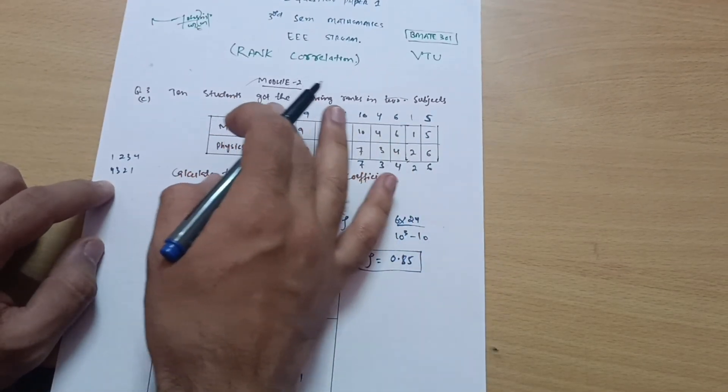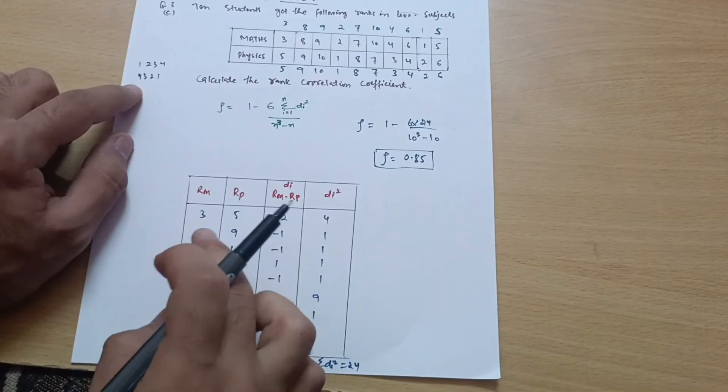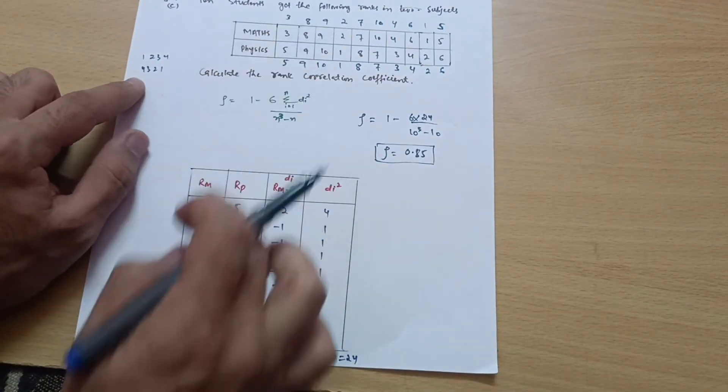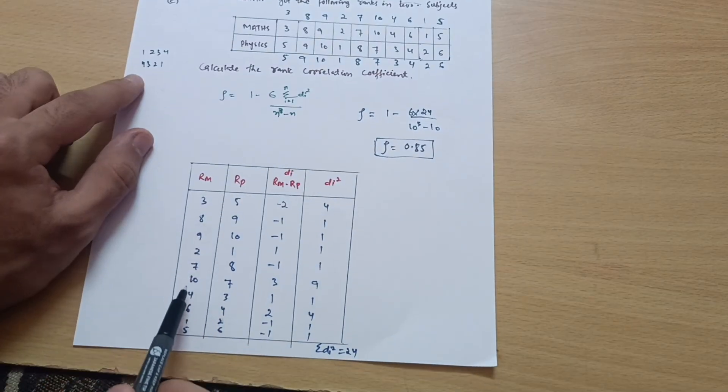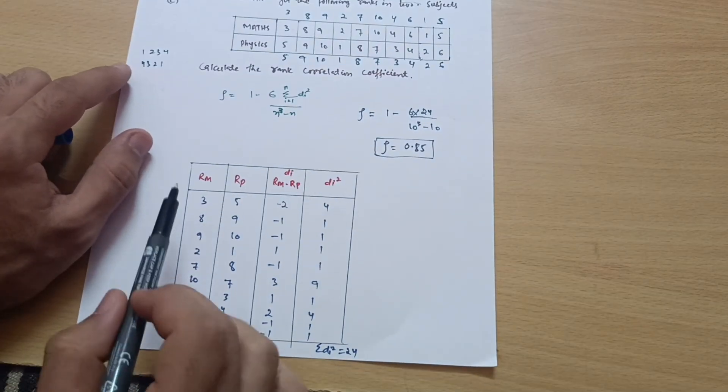Now take these ranks and make a table. This is the rank for the mathematics subject. Write down these values: 3, 8, 9, 2, 7, 10, 1, 4, 6, 5, like that you have to write down.